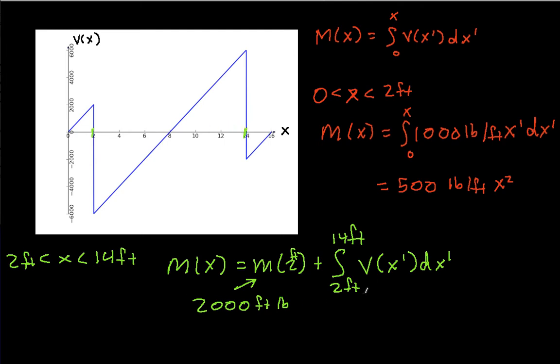This guy here is, let's see, 1,000 pounds per foot times x prime minus 8,000 pounds.